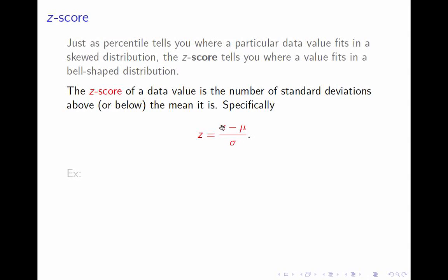That is, you take the value of your data point, you subtract the mean, and you divide by the standard deviation. Since I've written mu and sigma here, you understand that we're in a population context, but you can just as well do this in a sample context where you would write x bar and s.